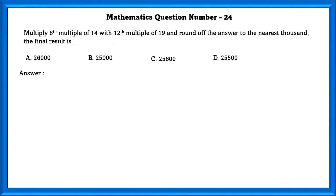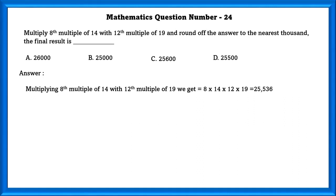Mathematics question number 24. Multiply the 8th multiple of 14 with the 12th multiple of 19 and round off the answer to the nearest thousand. Multiplying these two gives 25,536. Rounding off 25,536 to the nearest thousand gives 26,000.